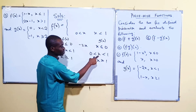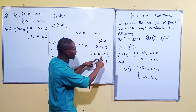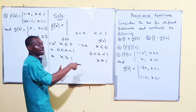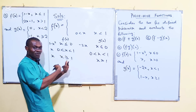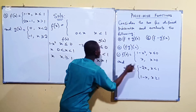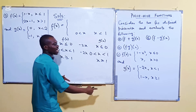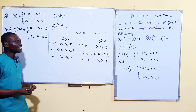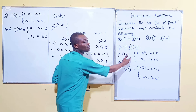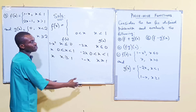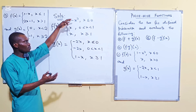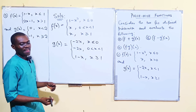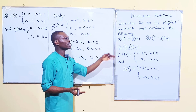When x ≥ 1, anything ≥ 1 goes to g's second piece. So we've rewritten both functions across the same three intervals. At this point, you can perform any operation on them successfully, because the functions now share the same interval boundaries.